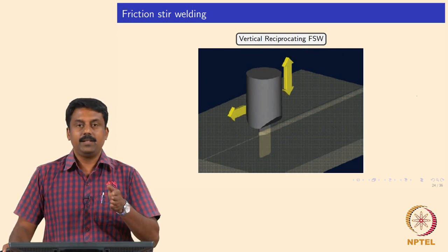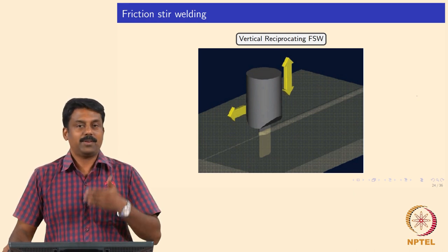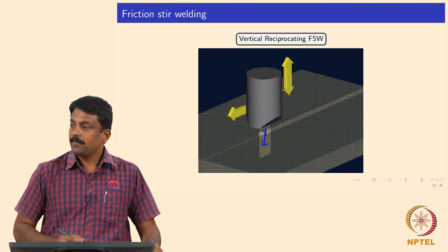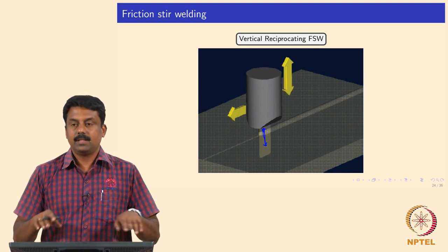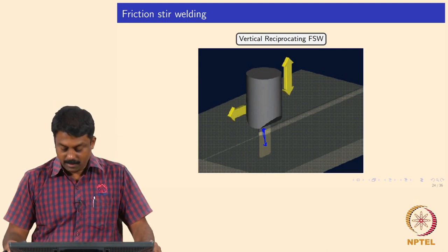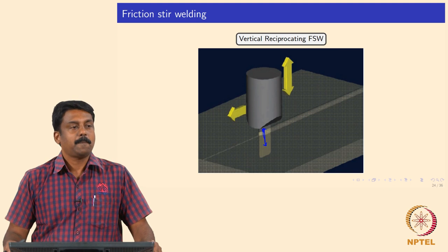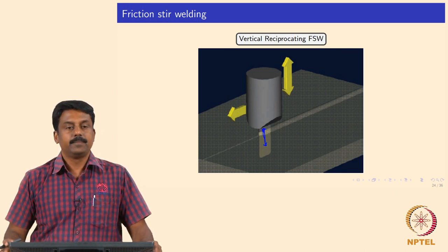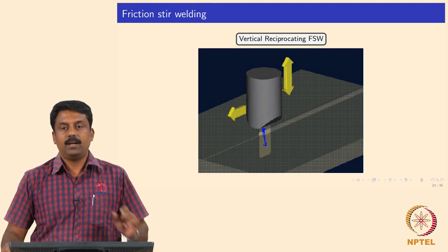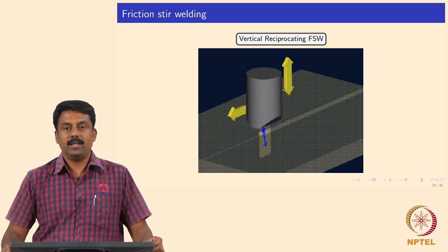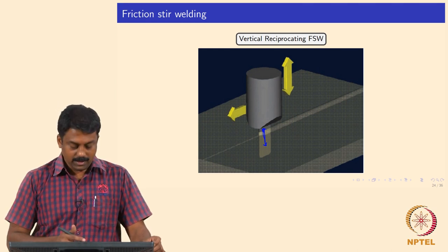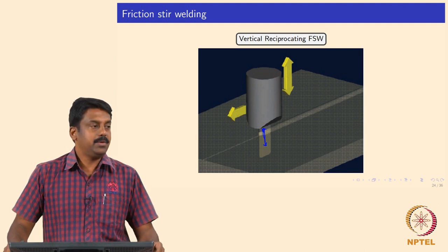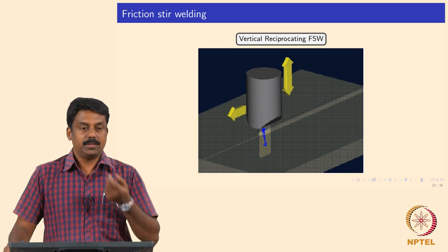Another variant uses vertical reciprocating motion — the blade goes up and down instead of linear. This causes heating at the interface, and clamping of the plates enables mechanical deformation across the interface, making a joint. All process parameters are important: vibrational frequency, blade configuration (flat or profiled), amplitude of vibration, pin material, pin-to-shoulder ratio — all must be carefully controlled to achieve a nice weld.